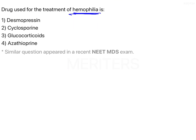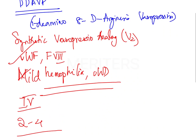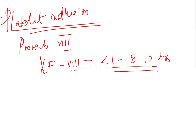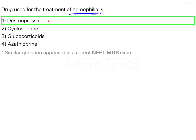The main mechanism to remember is that desmopressin releases von Willebrand factor and the roles of von Willebrand factor have been covered as well. The best answer for the treatment of hemophilia among the given options is desmopressin.